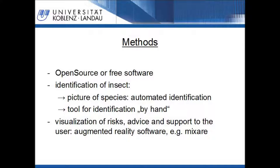It shall be possible to identify the species of an insect. There are two ways to identify an insect through the usage of software. The first method is the automated identification with a software tool — a picture of the insect's wing and the wing structure is analyzed. A second method is the classical method to determine the genus of the insect with an identification key as a software tool. After identification of the insect, the user should be delivered with information and advice about the risk and supported, e.g. about countermeasures or the location of healthcare facilities.